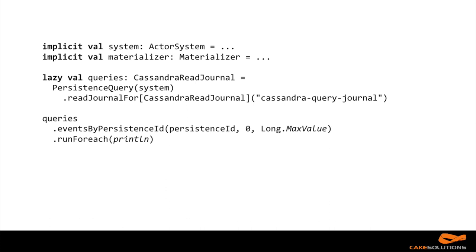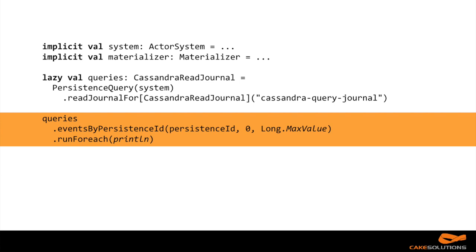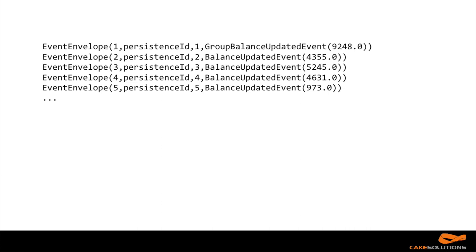There are multiple streams available. The first and simplest is eventsByPersistenceId. We get it by creating the Cassandra read journal using the PersistenceQuery extension, then ask for CassandraReadJournal. We simply call eventsByPersistenceId, and this gives us a stream of all events for a single actor in the correct order. The result looks something like this: all events for that single persistenceId ordered by their sequence number.